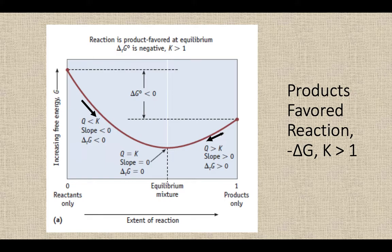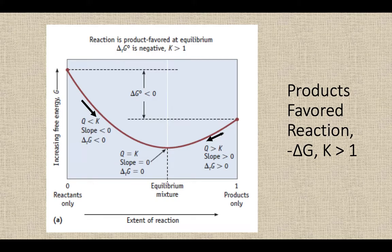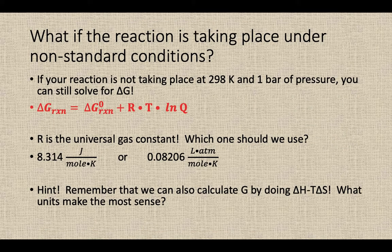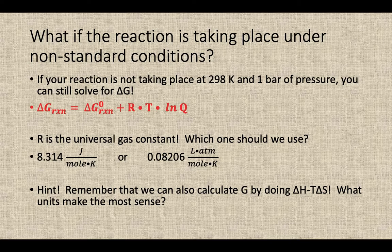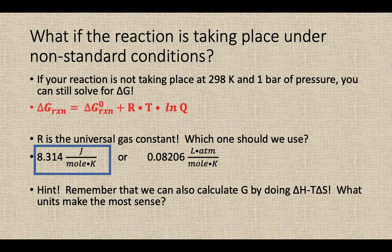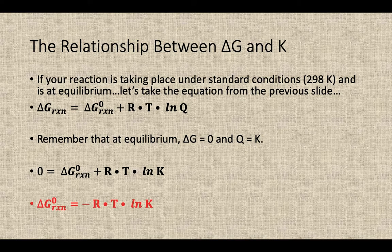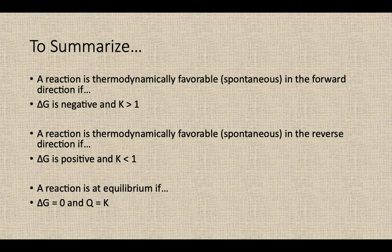But basically, the big idea to get out of these is that when you have a negative G value, your K for equilibrium is going to be greater than one products favored. And if it's a positive G value, your K is less than one positive G. There is a mathematical relationship for determining delta G under non-standard conditions. What if it's not at 298 Kelvin? But we're going to kind of skip over these ideas.